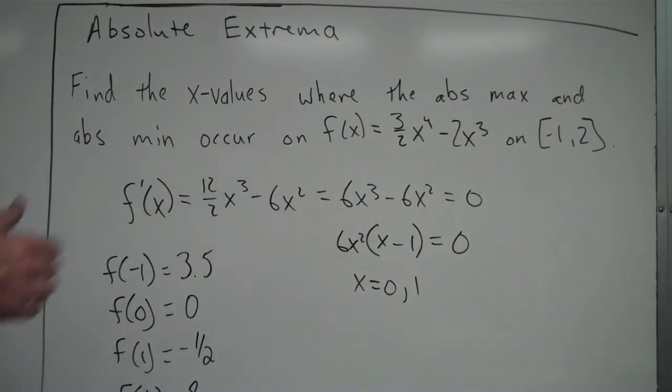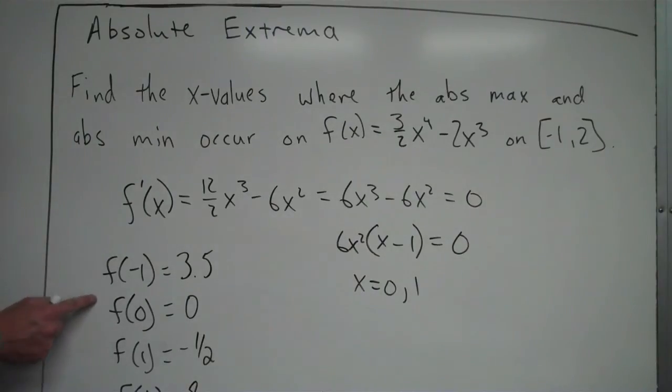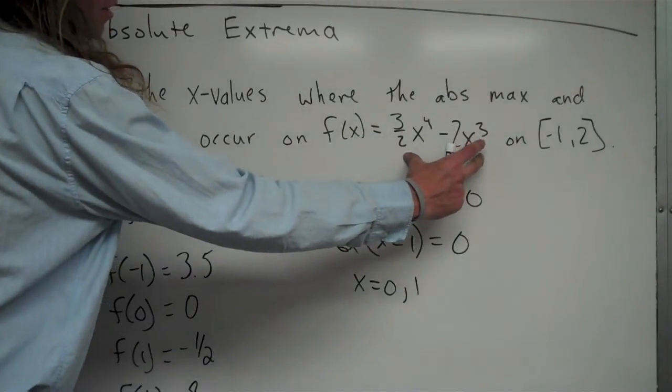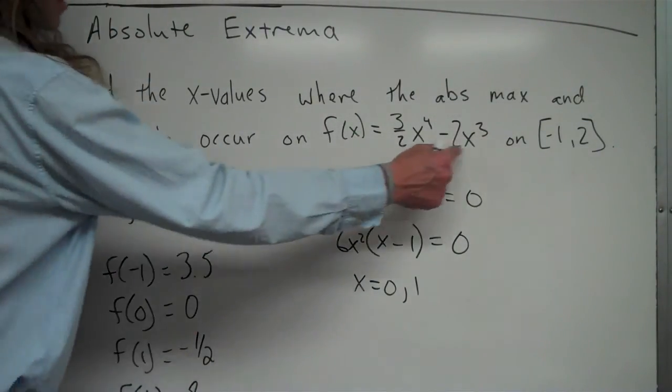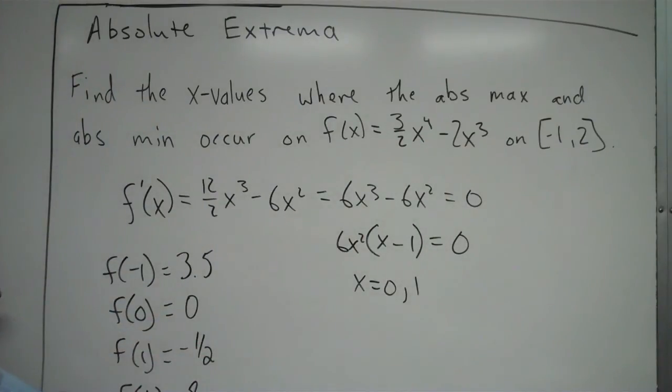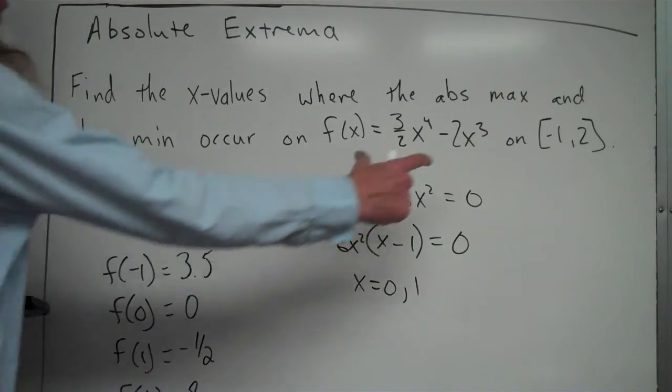So I figured out what all of those values are. All I did to find these values: I took -1, plugged it into the function and got 3.5. Took 0, plugged it in and got 0, and so forth. If you want to check me, go ahead. But it all comes down to plugging these values back into the original function.